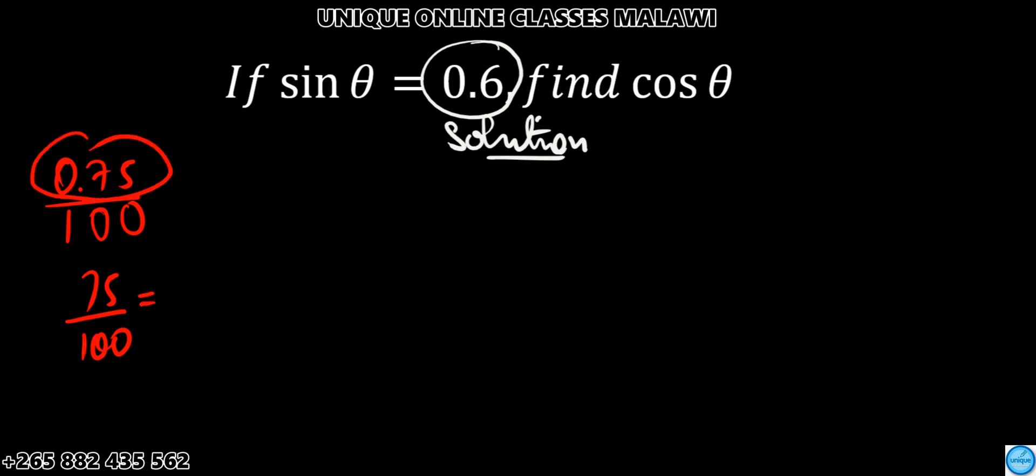And this one can also be simplified further as 25 into 75, that's 3, and 25 into 100, that's 4. It's 3 over 4.